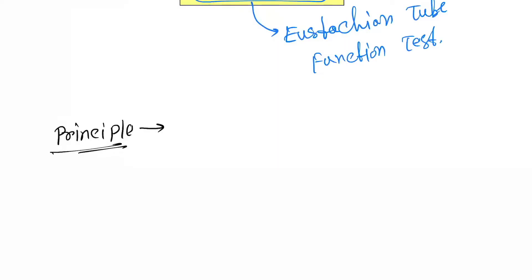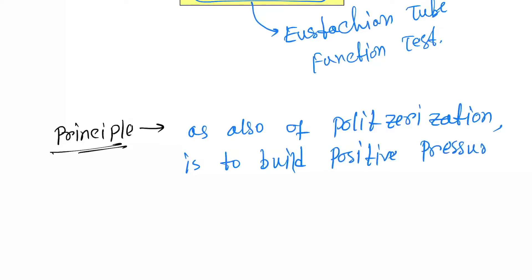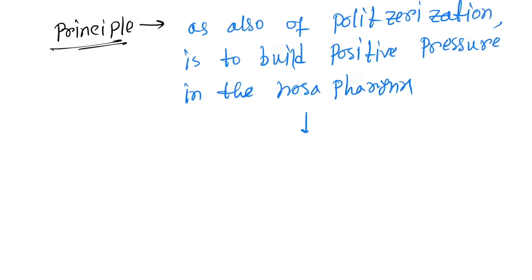The principle of the test, also called politzerization, is to build positive pressure in the nasopharynx so that air enters the eustachian tube.